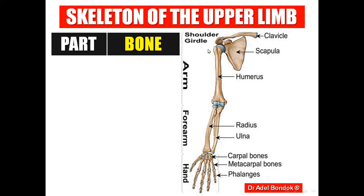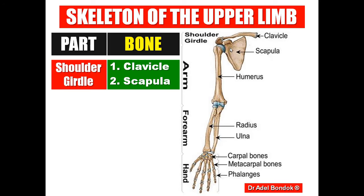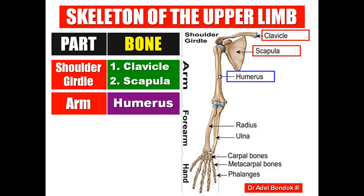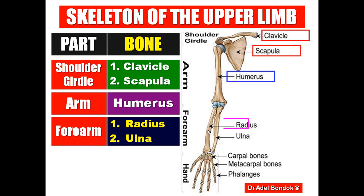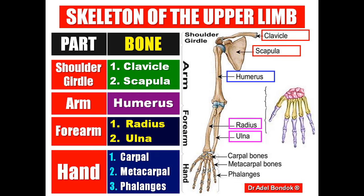Regarding the skeleton, first we'll talk about the regions. The first region is called the shoulder girdle, which is formed of two bones: the clavicle anteriorly and the scapula posteriorly. Then the arm — the skeleton of the arm is the humerus. The forearm has two bones: the radius laterally and the ulna medially. The skeleton of the hand is divided into three parts: carpal bones, metacarpal bones, and phalanges.